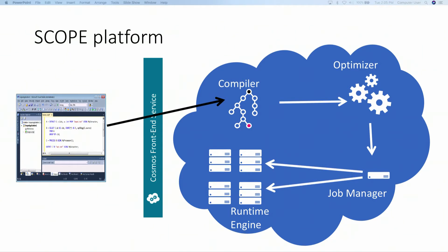The job manager's main responsibility is to take the compile-time DAG representation and start executing on the cluster. To do that, job manager launches the Scope engine on cluster nodes, telling it what data to process, where to write output, and which operators to run on that chunk of data. When Scope engine finishes, it produces new data and the job manager looks at the DAG to see which vertices were waiting for those inputs and starts executing them next. Users can also see the progress of their job through Scope Studio tooling — how far the job has progressed, how many tasks have run, any failures, how much data was read and written.